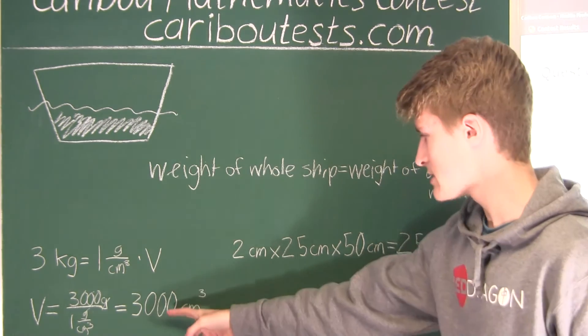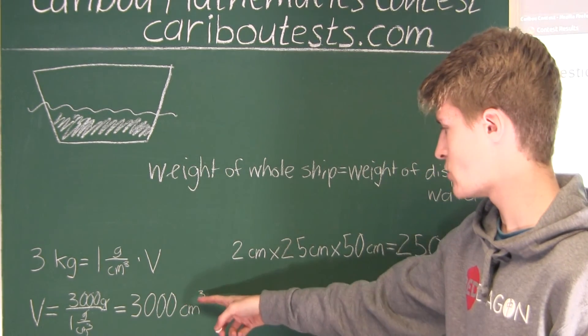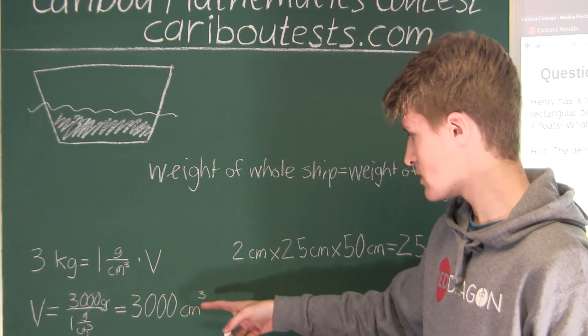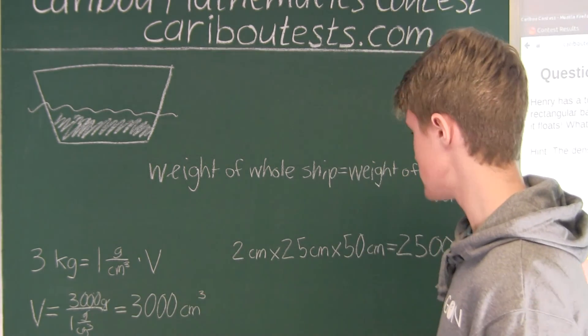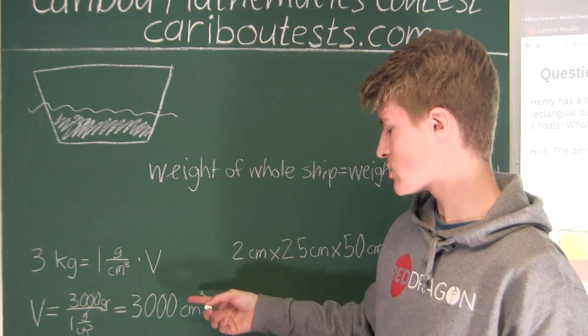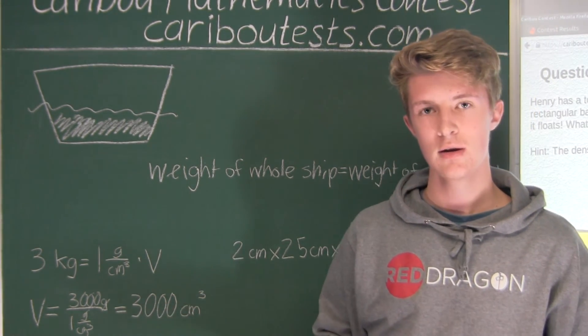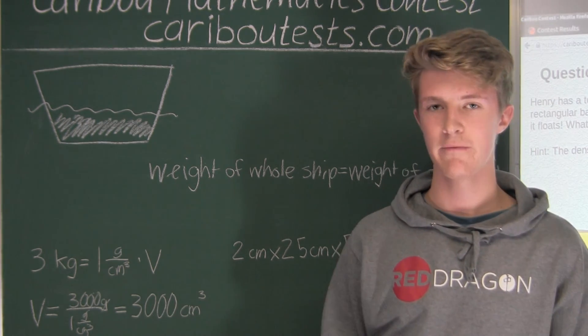So that means there is 500 cm³ too much. Now we have 500 cm³ too much, which is just half a liter, which means that the water then spills half a liter over.